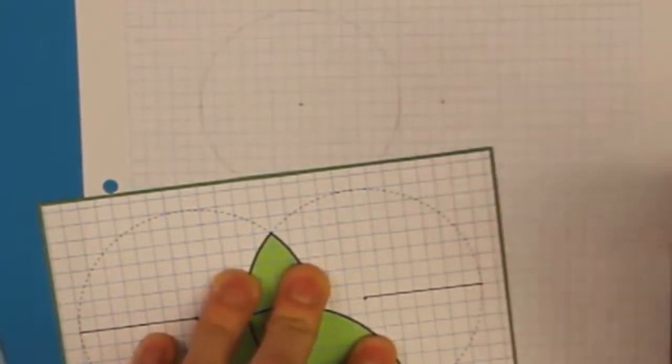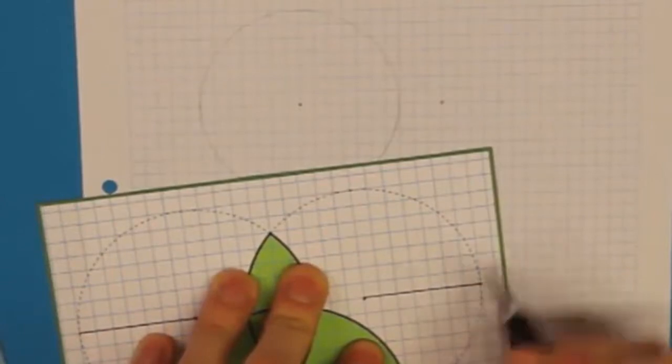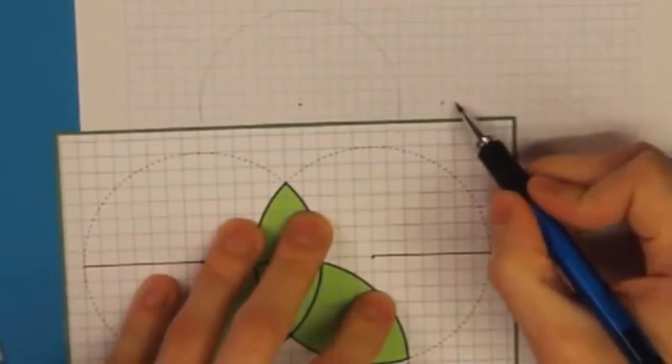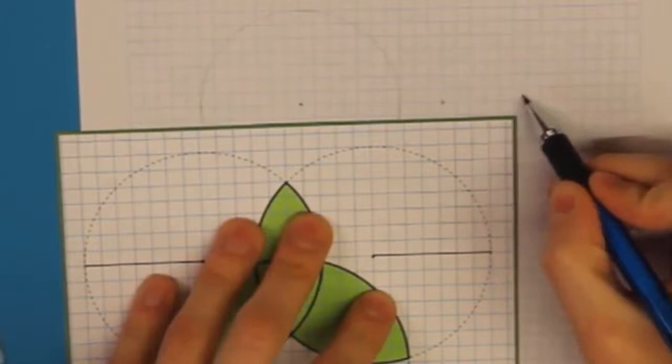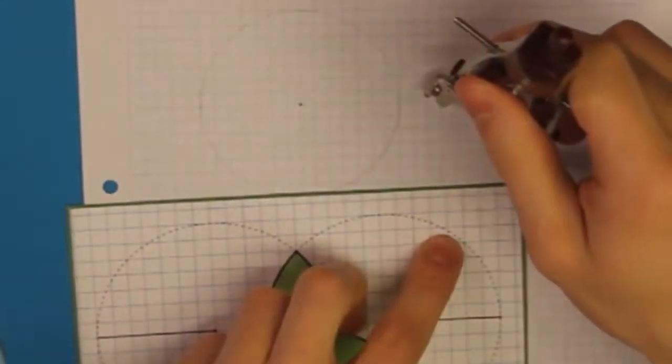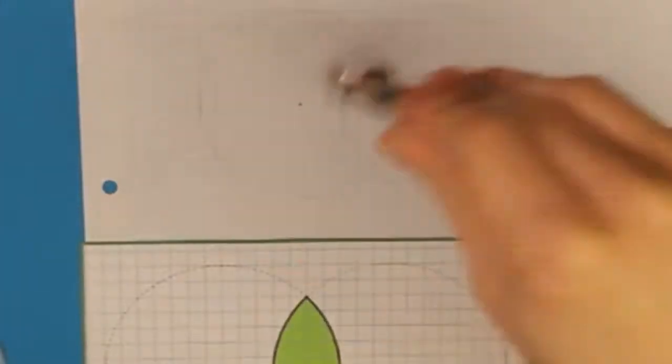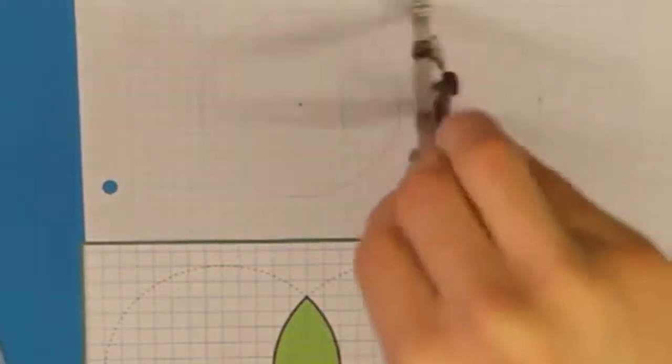Und als nächstes müssen wir wieder den Radius bestimmen. Auch dieser ist wieder sieben Kästchen, wie ihr hier auf der Vorlage sehen könnt. Das heißt, jetzt machen wir das gleich wie beim ersten Kreis. Wir zählen wieder sieben Kästchen vom Mittelpunkt weg, nehmen den Abstand in den Zirkel und konstruieren den Kreis. So weit, so gut.